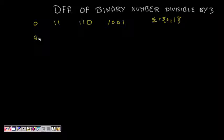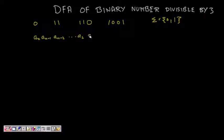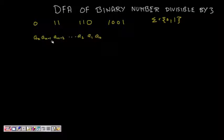So we have a binary number: a_n, a_{n-1}, a_{n-2}, ..., a_2, a_1, a_0. I will be starting from the left — MSB, second most significant bit, third most significant bit, and then I will go to LSB.